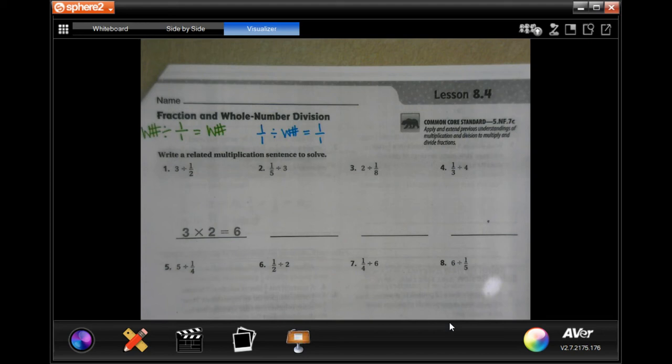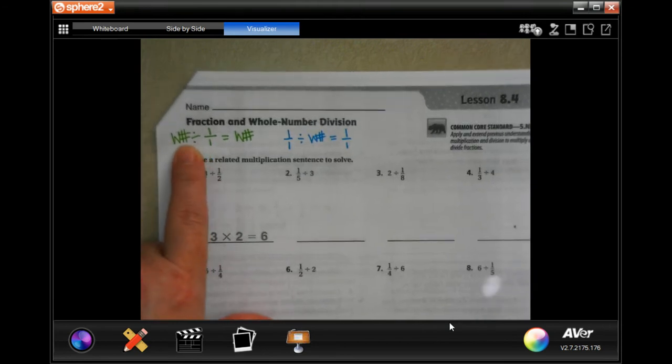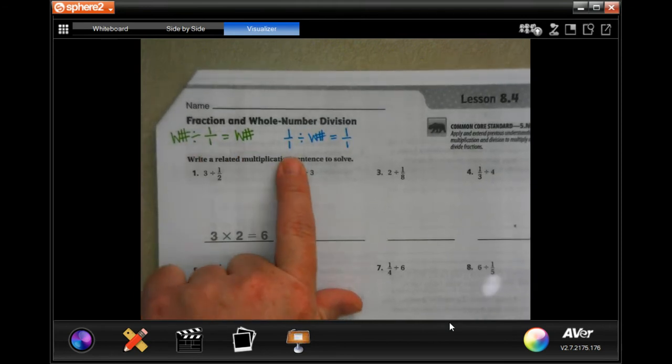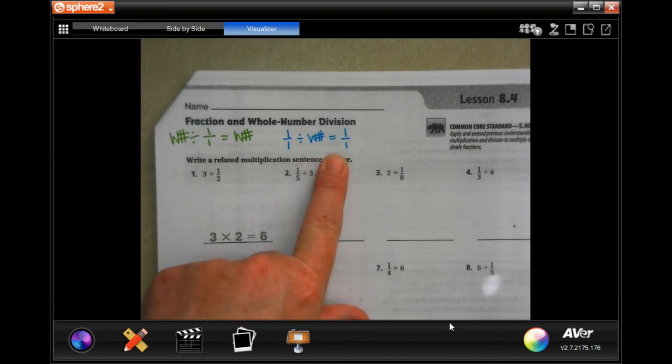Hey y'all, welcome to 5th grade, Chapter 8, Lesson 4. We're going to go ahead and get started. Before we do, I wrote up here that a whole number divided by a fraction is going to get a whole number. A fraction divided by a whole number and you're going to get a fraction.